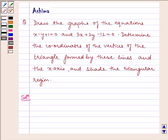Hello and welcome to the session. Let us discuss the following problem today. Draw the graphs of the equations x minus y plus 1 is equal to 0 and 3x plus 2y minus 12 is equal to 0. Determine the coordinates of the vertices of the triangle formed by these lines and the x-axis and shade the triangular region.